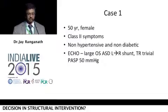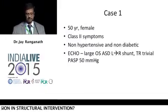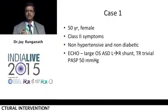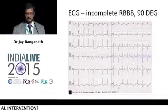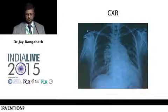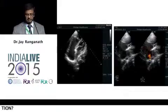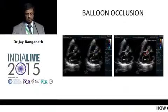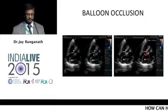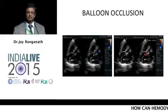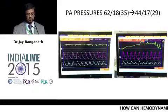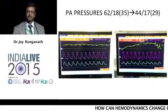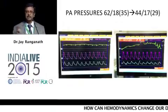Case one: a 50-year-old female, class 2 symptoms, non-hypertensive, non-diabetic, large secondary ASD, pulmonary artery pressure 50. For most elderly patients over 40 years of age, it takes about 30 seconds to calculate the PA pressure. This is incomplete RBBB — a very standard ASD. X-ray shows cardiomegaly and plethoric lung fields. The PA pressure is 50 in the cath. We occluded with a balloon and saw what happens — PA pressure came to 62, slightly more than on echocardiography, but looks like one-third of systemic.